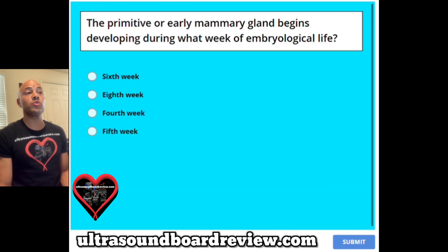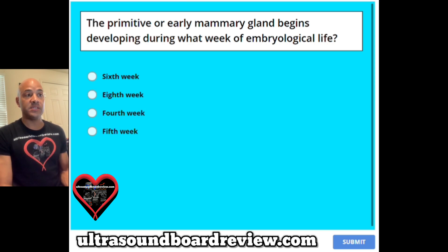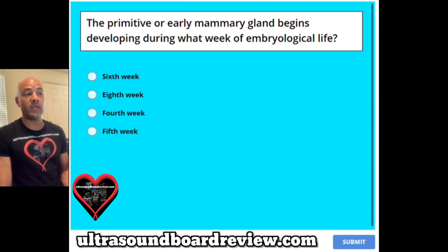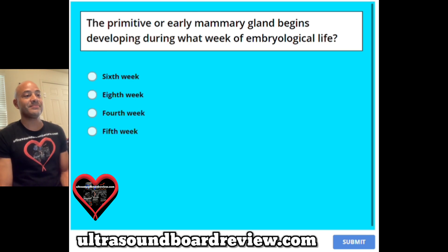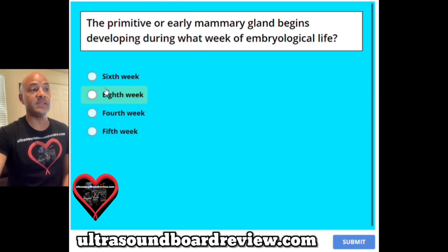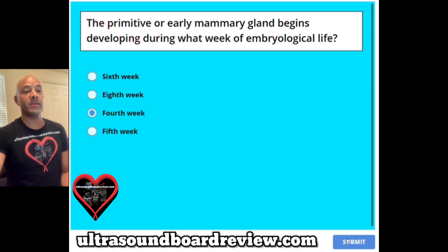Question 22. The primitive or early mammary gland begins developing during what week of embryological life? A sixth week, B eighth week, C fourth week, or D the fifth week? The answer is C, the fourth week.